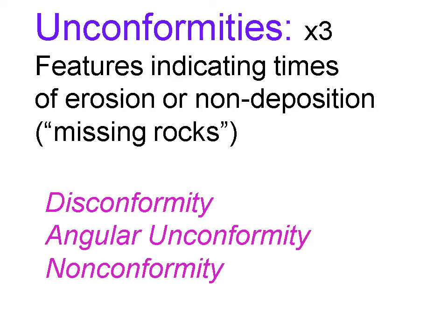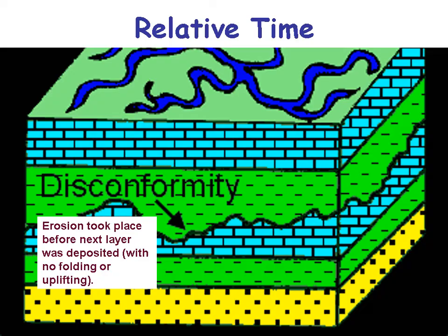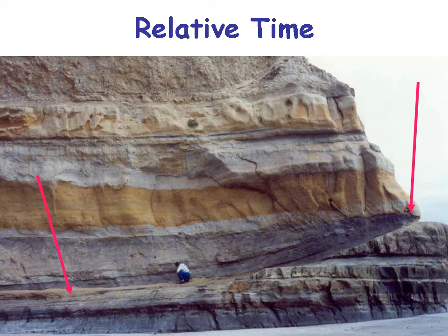Unconformities are features indicating times of erosion or non-deposition — they represent missing rocks. There's a disconformity, an angular unconformity, or a nonconformity. A disconformity is an erosional plane between parallel rock layers — for example, an erosional surface between a limestone base and a shale above it, with a sandstone below. The erosional surface is then covered up with another rock.